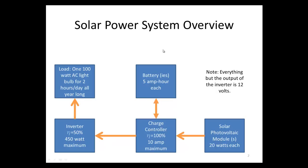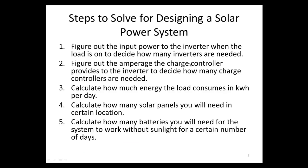So how do we choose how many of these components we need? We start with all the steps to design a solar power system. Step one is how many inverters we need. Step two is how many charge controllers are needed. Step three, we calculate how much the load uses per day. Then in steps four and five we calculate how many solar panels and batteries we'll need.